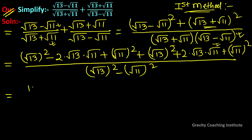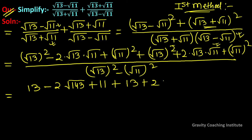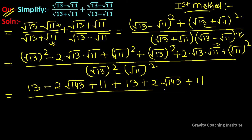Expanding the numerators: (√13)² - 2√(13×11) + (√11)² = 13 - 2√143 + 11, and (√13)² + 2√143 + (√11)² = 13 + 2√143 + 11. The denominator is 13 - 11 = 2.